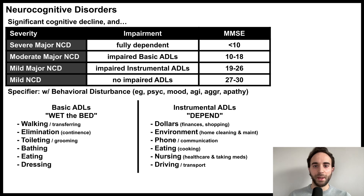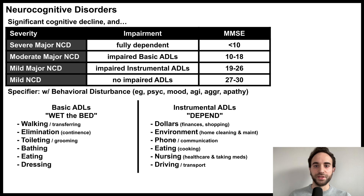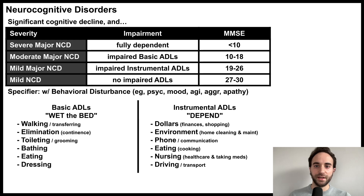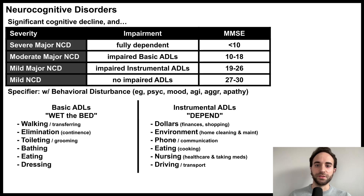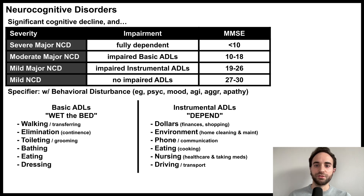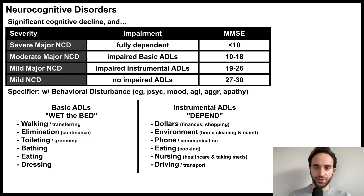Instrumental ADLs can be remembered with the mnemonic DEPEND. Dollars, which refers to managing finances and shopping. Environment, which refers to cleaning and performing maintenance on a home, as well as doing laundry. Being able to use a phone or communicating through other means. Eating, which in this case refers to cooking meals. Nursing, which refers to managing one's health care and taking medications. And driving, or managing other means of transport.